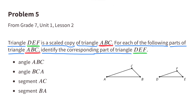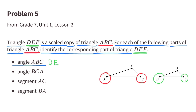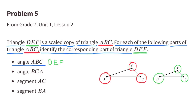Number five: triangle DEF is a scaled copy of triangle ABC. For each part of triangle ABC, identify the corresponding part of triangle DEF. Angles A and D are corresponding angles, angles B and E are corresponding angles, and angles C and F are corresponding angles. So the order DEF corresponds with the order ABC.